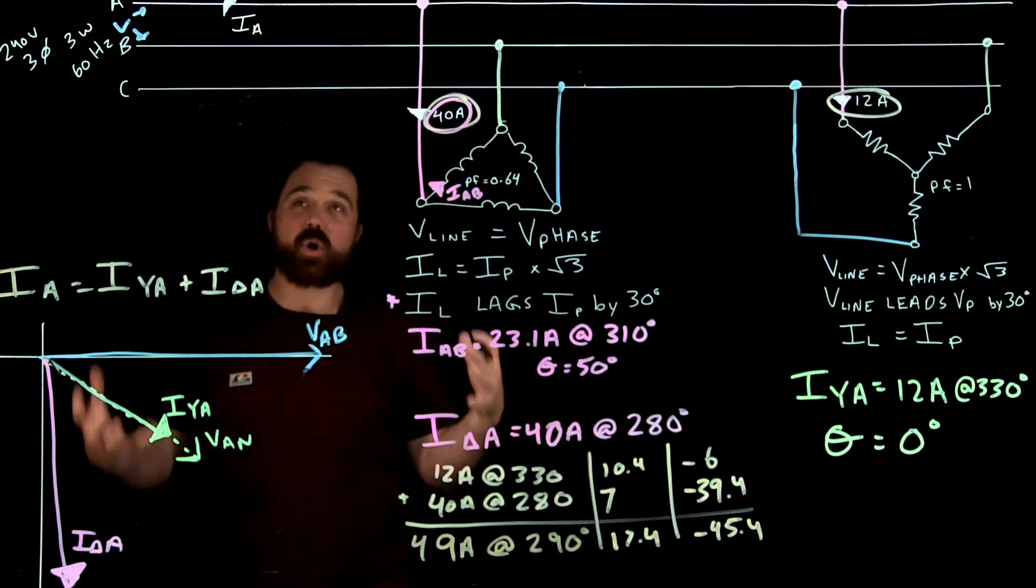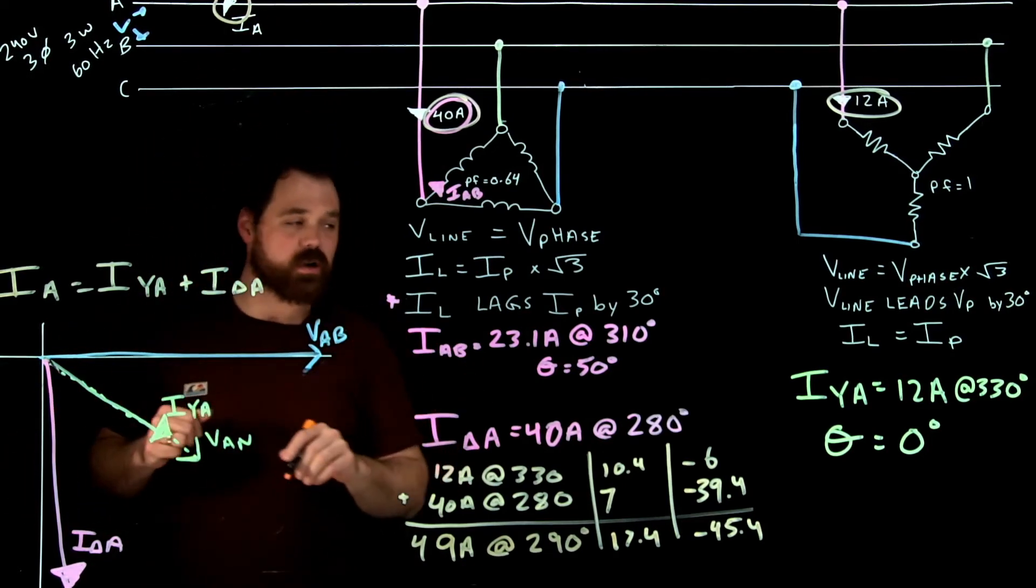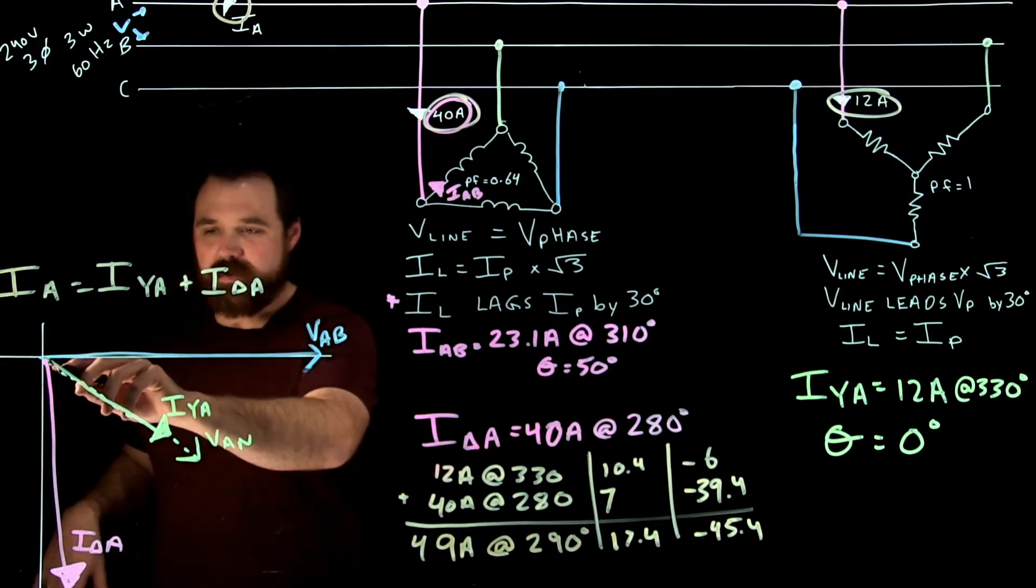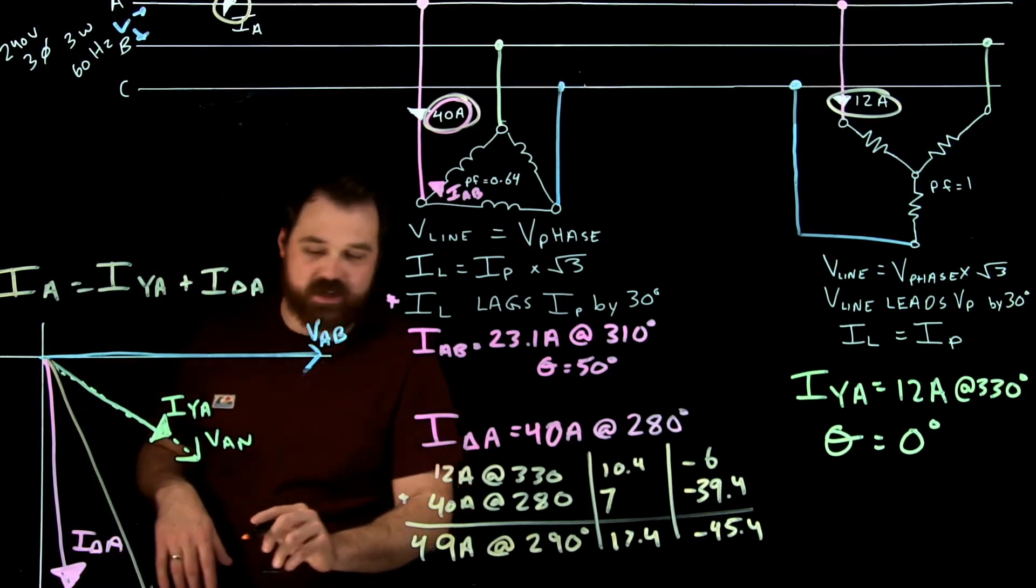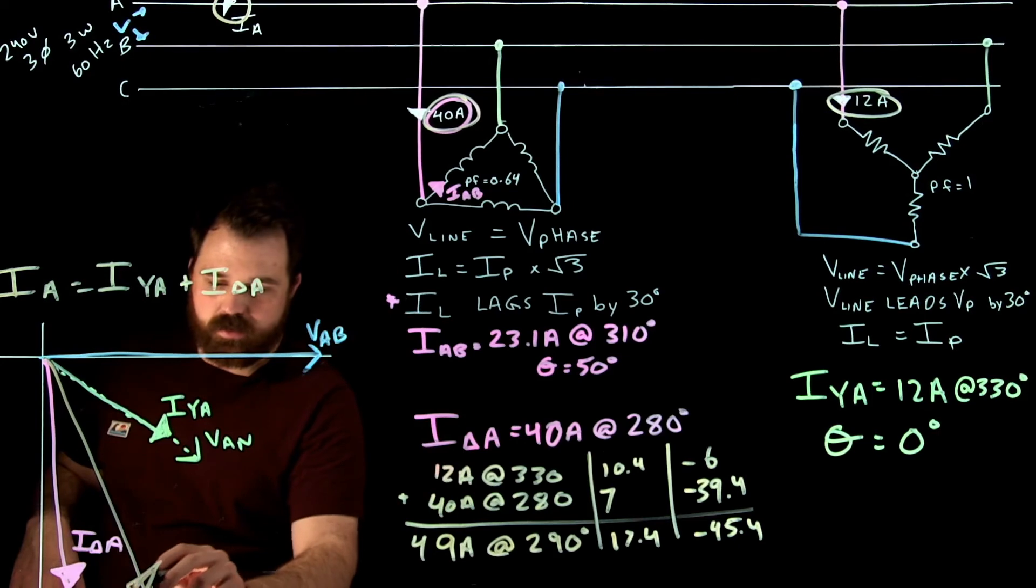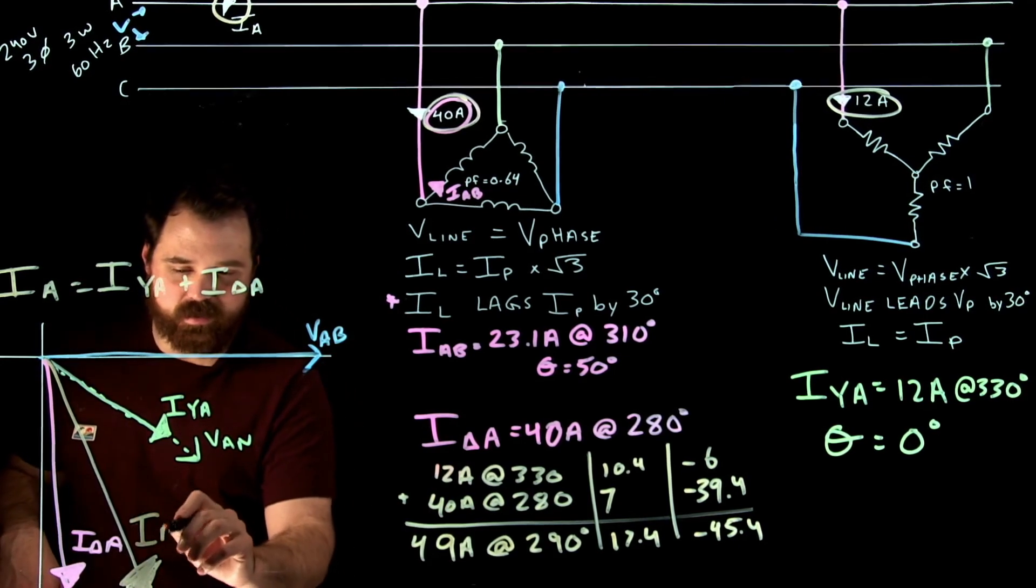So that would be our total current flowing there on the main source. And again, I don't have enough room on my phasor diagram here, but that would be wherever that is. It ends up way down there, a little bit off screen. And that's okay. That's I A.